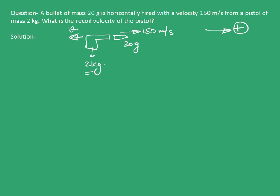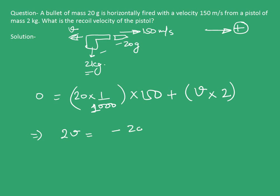I will apply law of conservation of momentum to find velocity V as there is no external force acting on this system. Initially, the momentum of the system is 0 as there is no velocity for bullet or gun. As soon as the gun is fired, momentum is 20 into 1/1000 into 150 for the bullet, plus velocity V into 2 for the gun. Equating this, we get 2V equals minus 20 into 150 upon 1000.